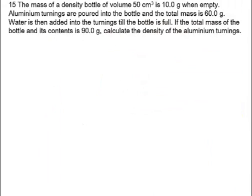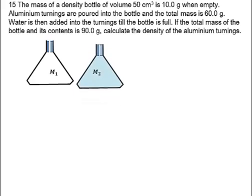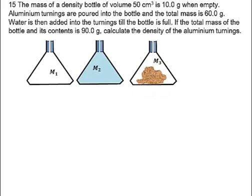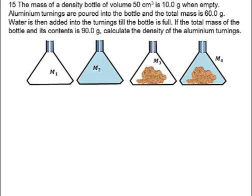Question 13 had four basic steps. Step one was to determine the mass of an empty density bottle. Step two, we filled the density bottle with a liquid — in that case, it was kerosene. Step three, we found the mass of a solid and the density bottle. And step four, we filled the space above the solid with a liquid whose density was known — in that case, it was kerosene.